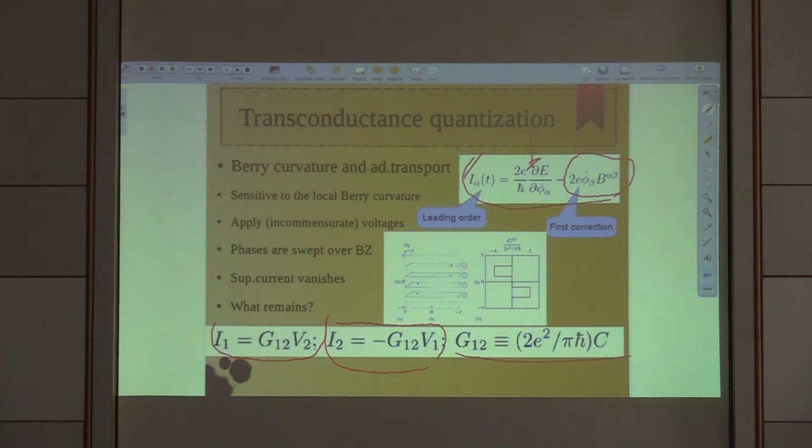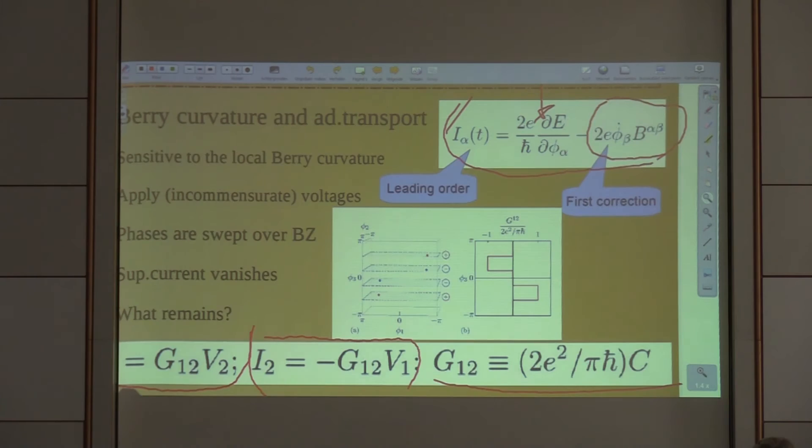One can move the plane, so one can switch Chern number. This curve demonstrates dependence of transconductance on this tuned parameter phi-3. One can see jumps of transconductance any time the plane passes a Weyl singularity position.